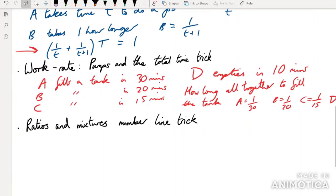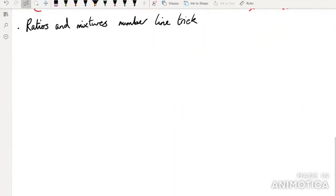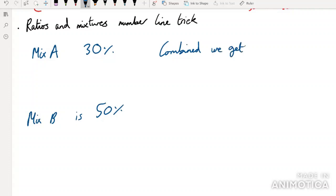Again, you'll see how to know which one to use in the example video. I'll do a lot of examples. And then the next type of word problem that is, I personally think this trick makes these incredibly simple, which is the ratios and mixtures number line trick. And this just makes these questions, it just demolishes them. We have mixture A is 30% concentrated or something. Mixture B is 50% concentrated. Combined, we get 35% concentration. What is the ratio of A to the mixture? This kind of question.